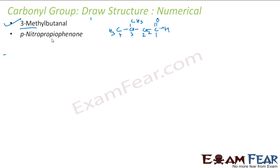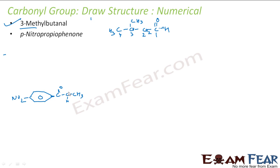Next is paranitropropiophenone. So let me draw phenone first. This is my benzene ring. At para I have a nitro group. This is a propiophenone — meth, eth, prop. This is the propiophenone. And at para I have a nitro group at this para position. Let me add a nitro group here. So this is my structure. I can add hydrogens. This is my nitro, this is C. Propiophenone with nitro at the para position.